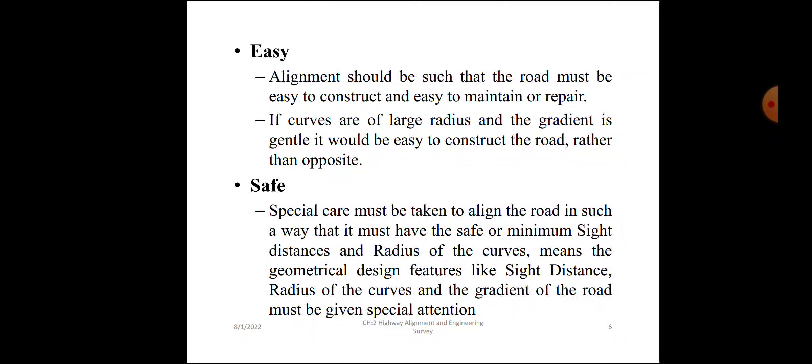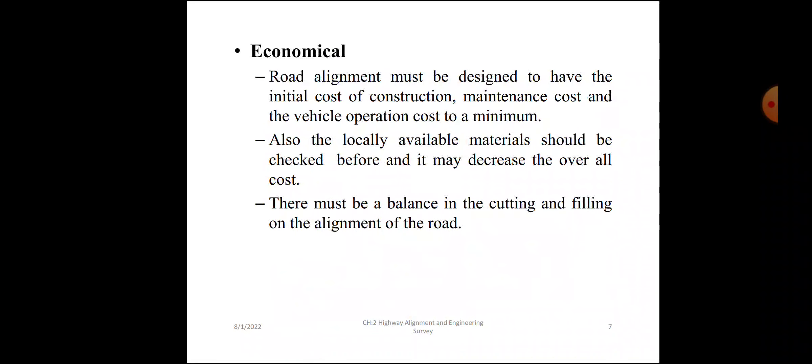Safe: special care must be taken to align the road in such a way that it must have safe minimum sight distance and radius of curve. The geometrical design features like sight distance, radius of the curve, and gradient of the road must be given special attention. Economical: road alignment must be designed to have the initial cost of construction, maintenance cost, and vehicle operation cost at a minimum. The locally available materials will be checked beforehand as it may decrease the overall cost.